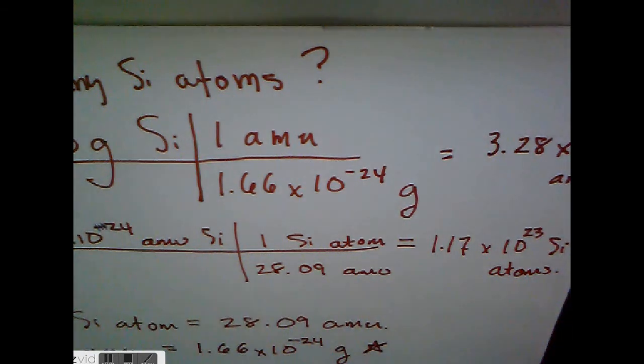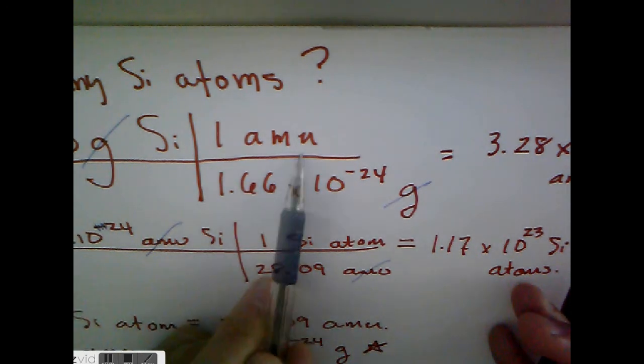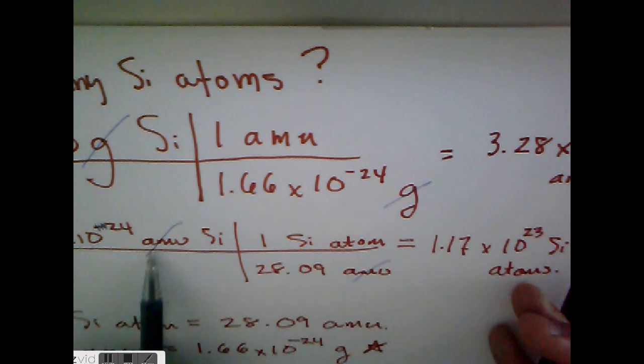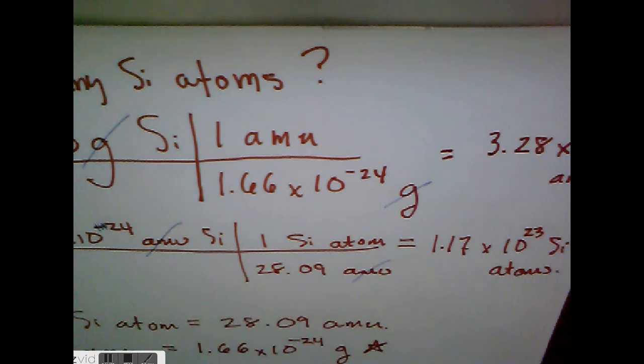So if you go through this, you will see — whenever you do these problems, I love having my students check their work. Everything should cancel. See how now atomic mass units cancel out? See how the number of silicon atoms is left over? This is how you convert to the number of atoms. Now I'm going to stop this.